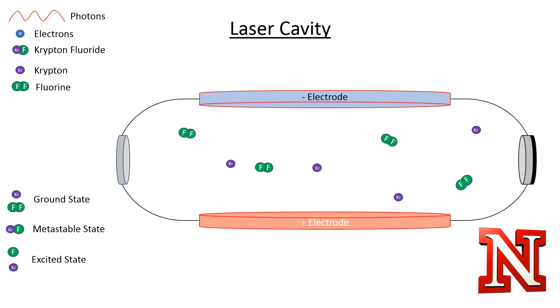Krypton and fluorine atoms are introduced into the laser cavity. This is the ground state of the molecules. Electrons discharged from the negative electrode may collide with krypton or fluorine atoms. The electrons will excite the krypton atoms or break apart the two fluorine atoms.